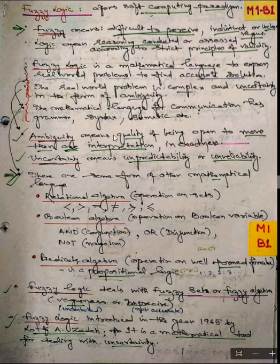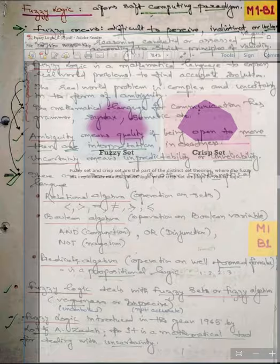Let me give you a brief highlights about a term CRISP logic or CRISP set. If you see over here a term, Fuzzy set and CRISP set are part of distinct set theories where a Fuzzy set implements infinite-valued logic and CRISP set employs bi-valued logic. This is a very important term.